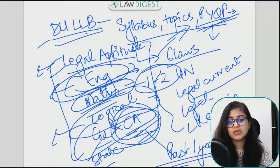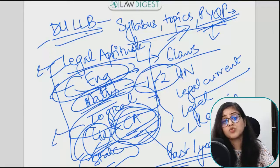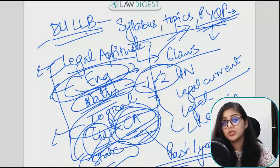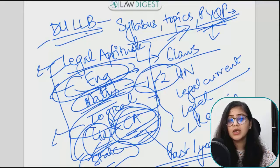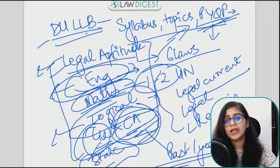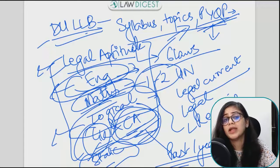For GK — static GK — Lucent is a good resource. However, if you pick it up late, it can be too much. If you start preparing early and are clear about it, then you can study from Lucent. For current affairs, you can follow online compendiums. Many students prefer reading newspapers and making notes daily — you can do that as well.